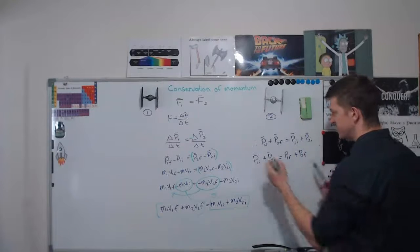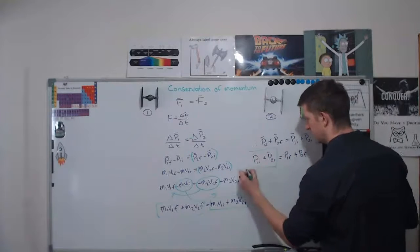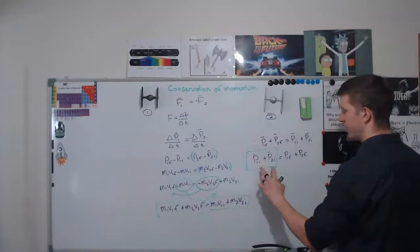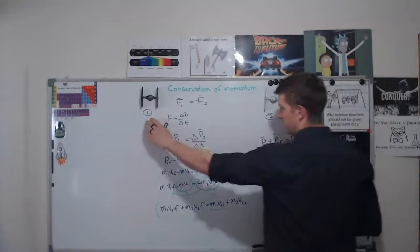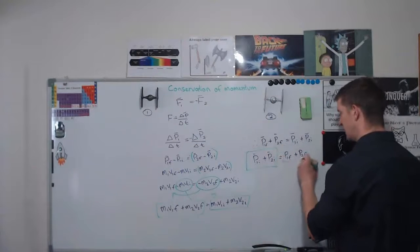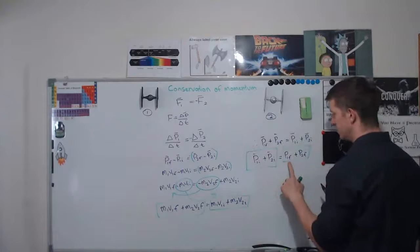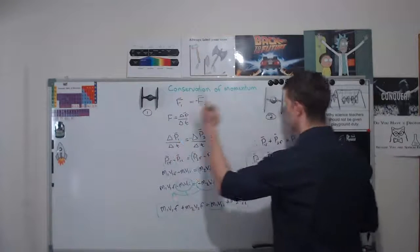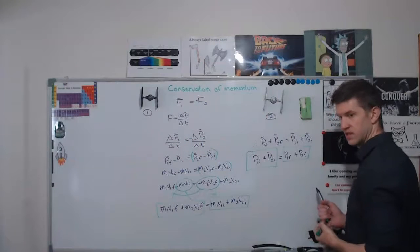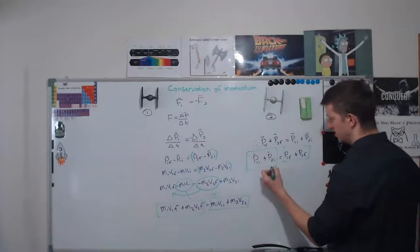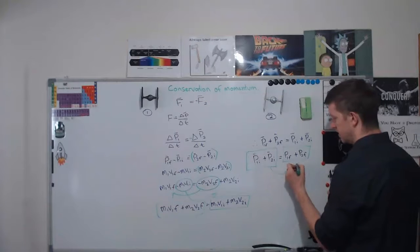And again, this is the entire system. So before they've collided, the momentum of TIE fighter 1 plus TIE fighter 2 is equal to after the collision, the momentum of TIE fighter 1 plus the momentum of TIE fighter 2. So you can see here that the momentum is always equal.